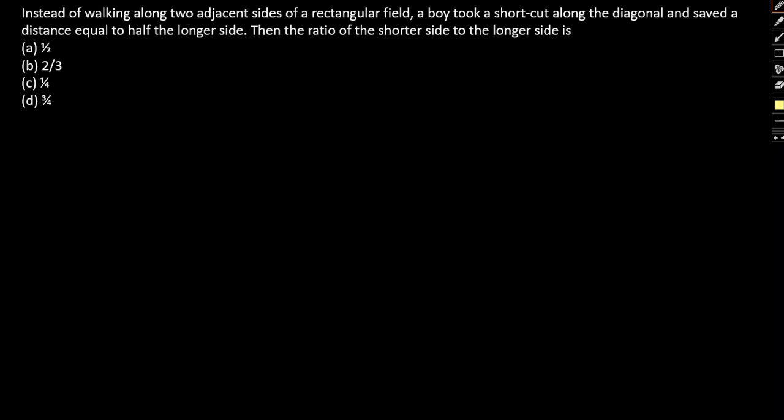So here instead of walking along the adjacent sides of a rectangular field, the boy took a shortcut along the diagonal. So say this is the rectangular park.